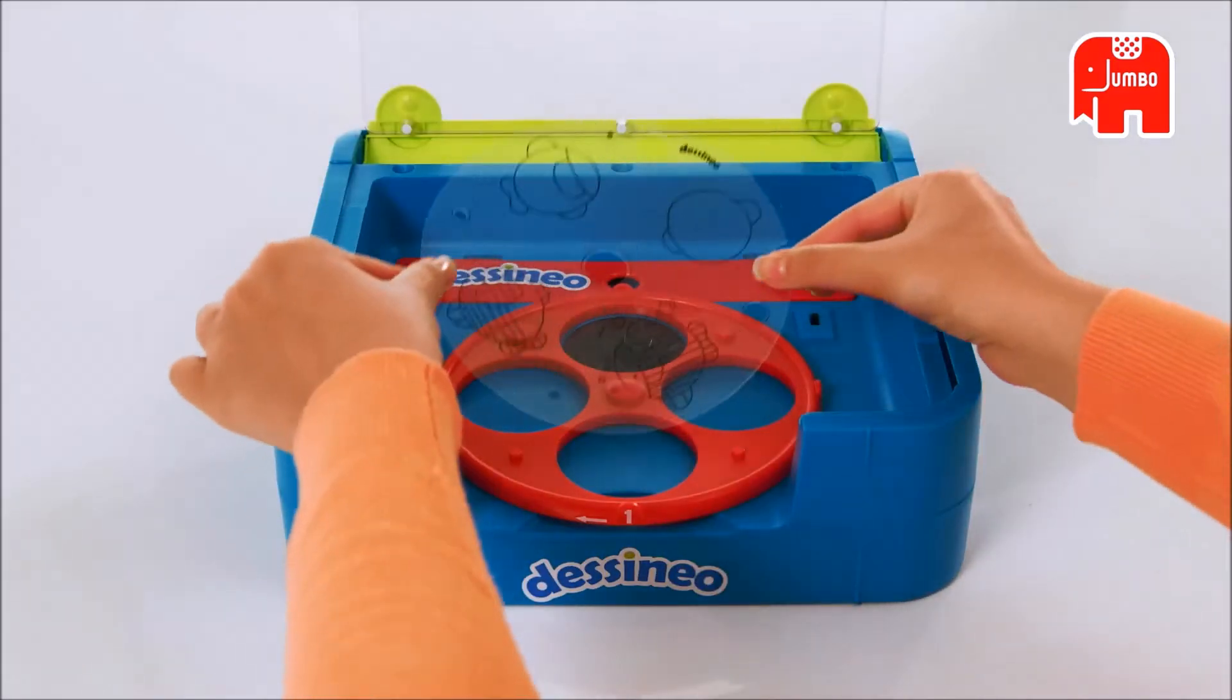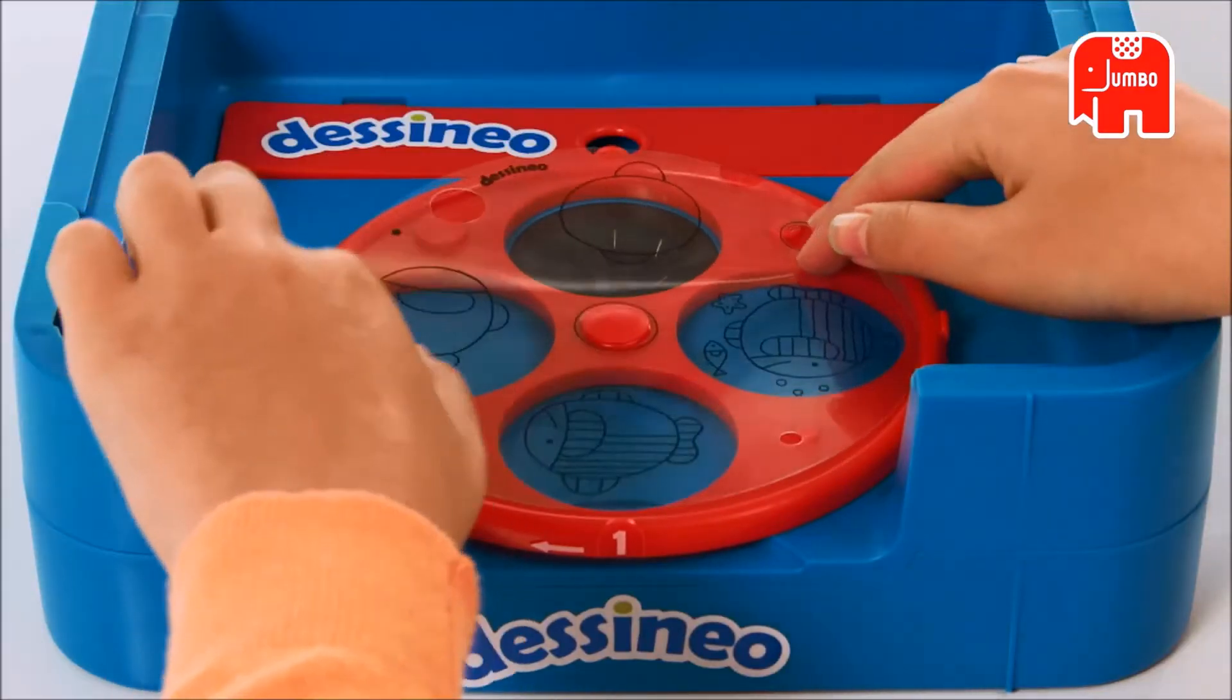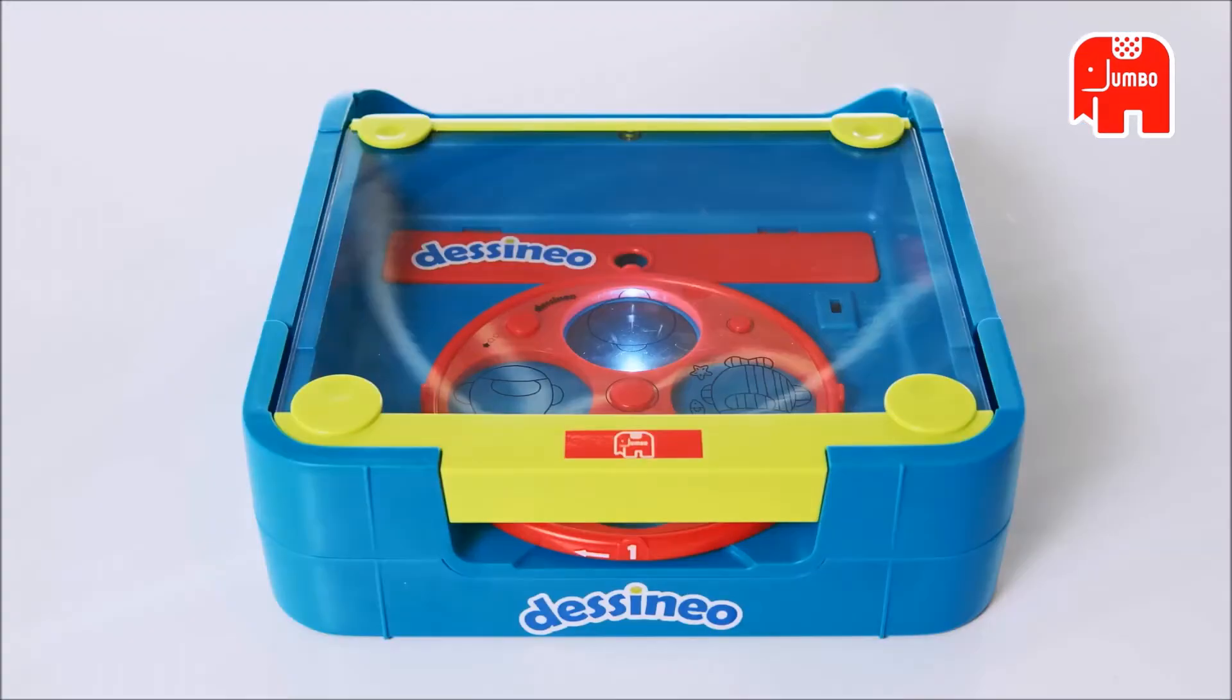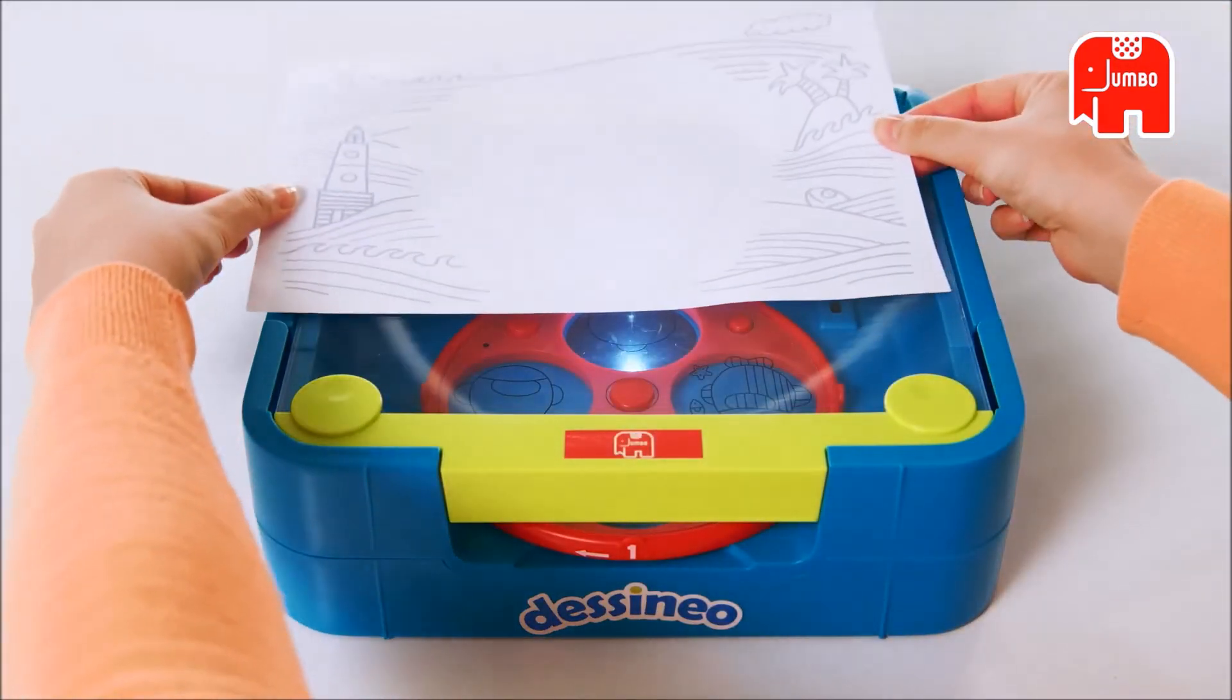The stencils are divided into three levels. Choose one of the stencils and place it in the rotating dial. Then turn the projector on.